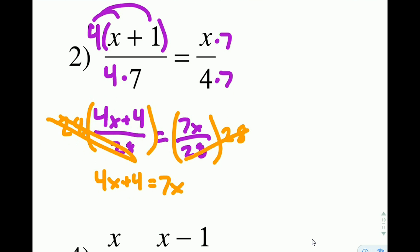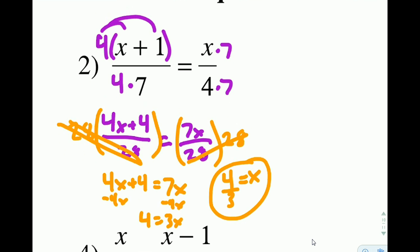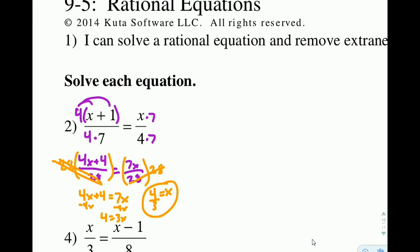Leaving us with 4x plus 4 equals 7x. Now from here we have a nice easy algebra problem. We subtract 4x from both sides. Leaving us with 4 equals 3x. And we can divide both sides by 3 so that x, when left alone, is equal to 4 thirds. So x equals 4 thirds is the answer to that equation.